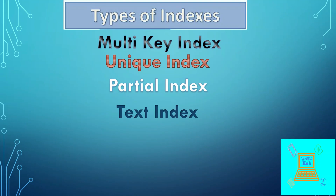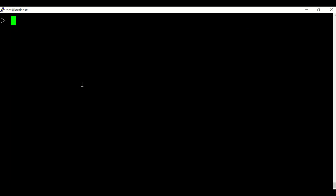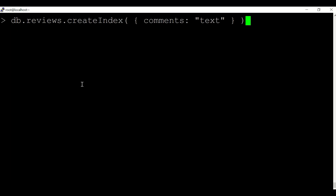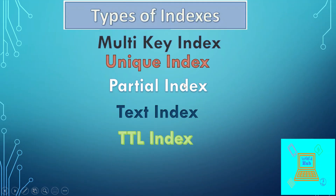The next type is a text index. A text index is a type of index you can create on a field that contains a string or an array of string elements. You create a text index in this manner — for the field on which you want to create the index, you mention 'text'. The next type is a TTL index, or time-to-live index. A TTL index can be used to remove a set of documents from a collection after the expiry of a specific time.